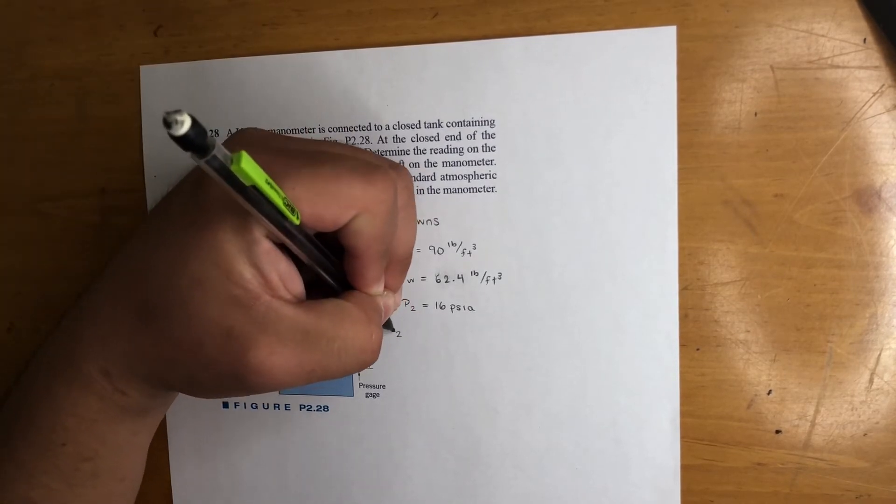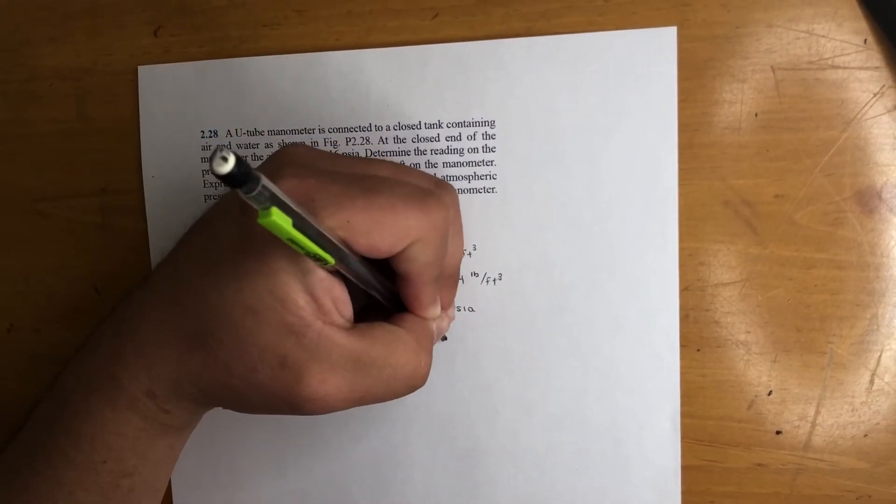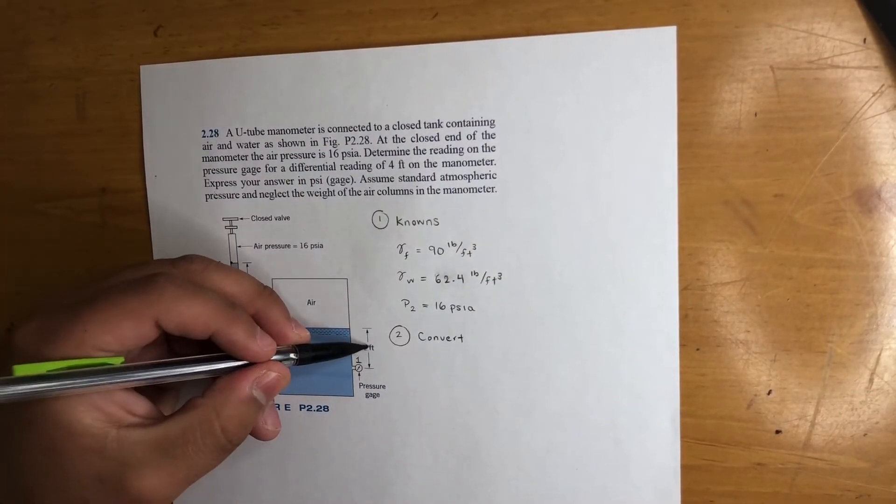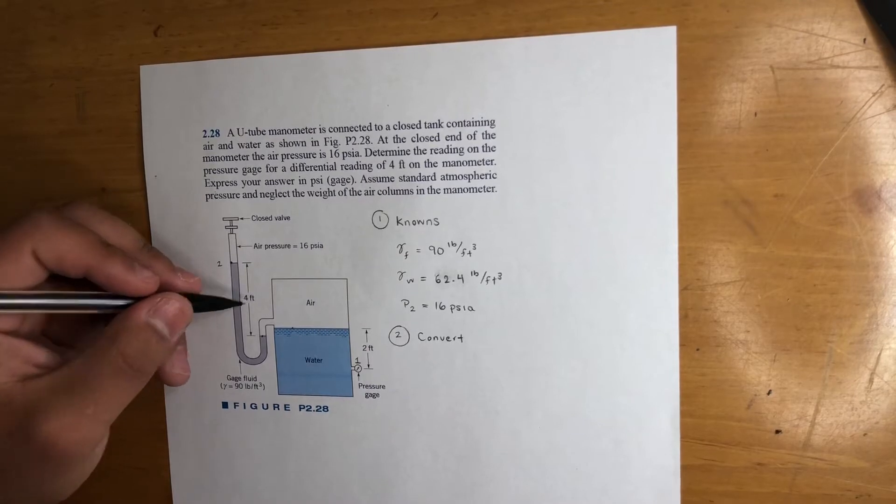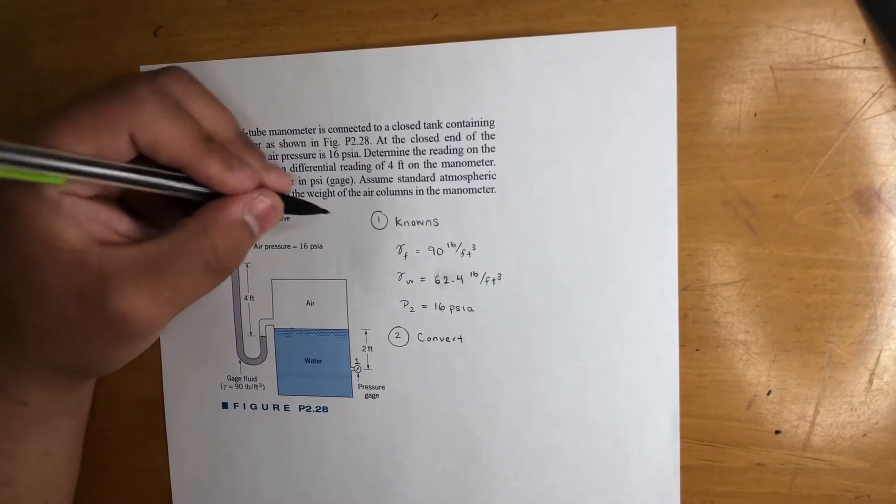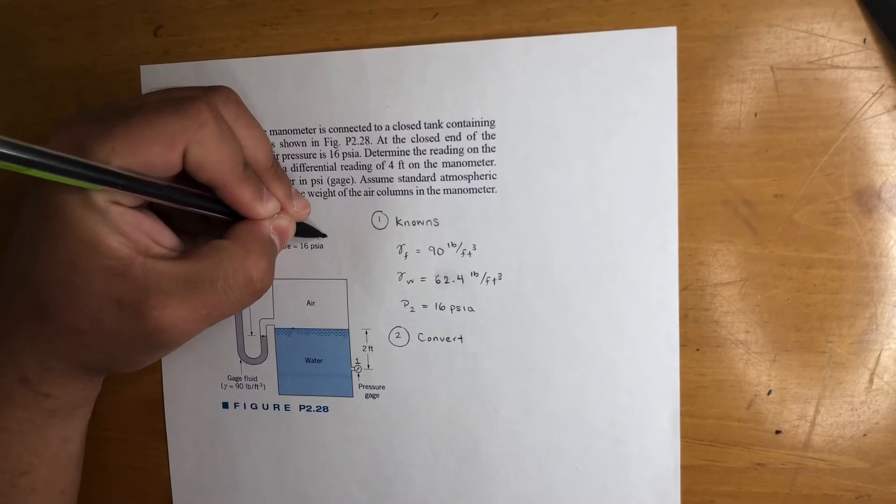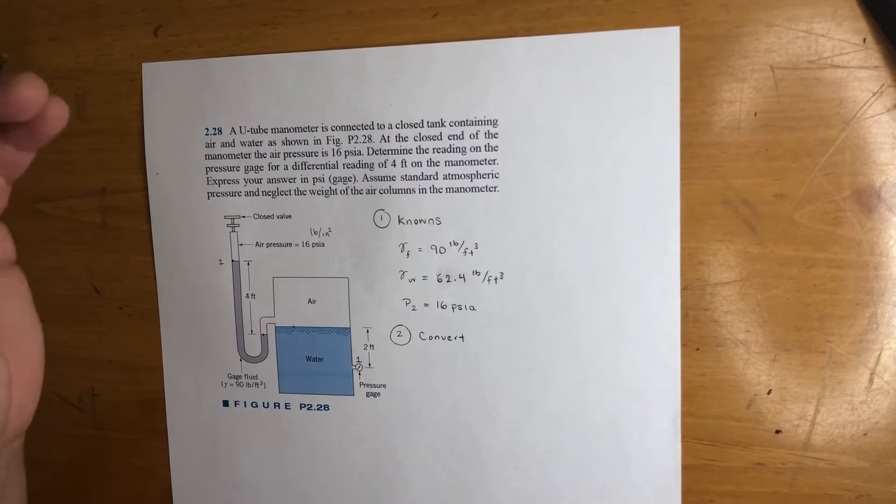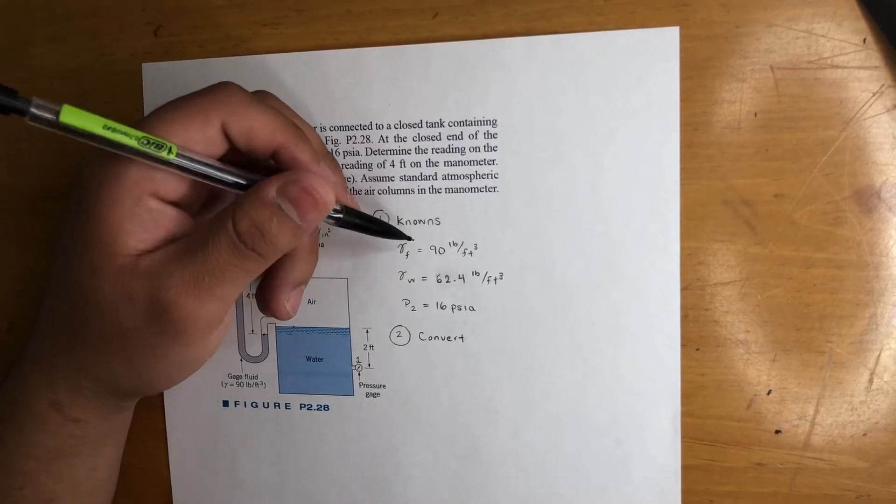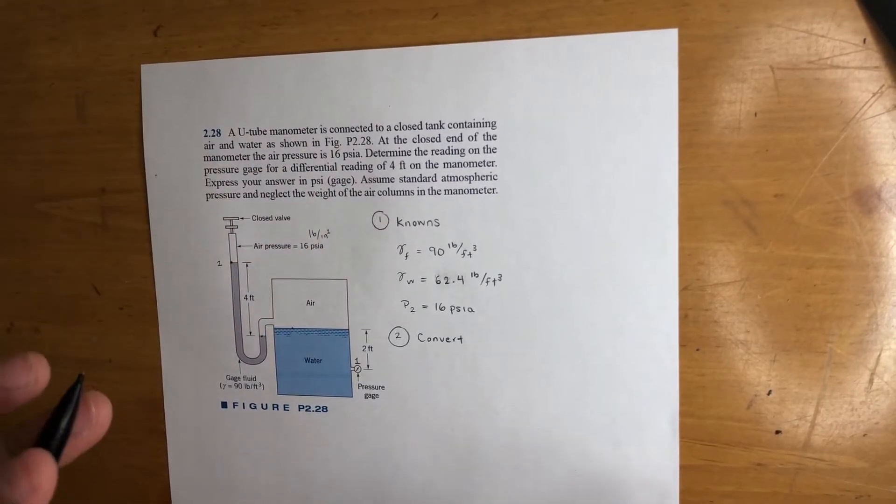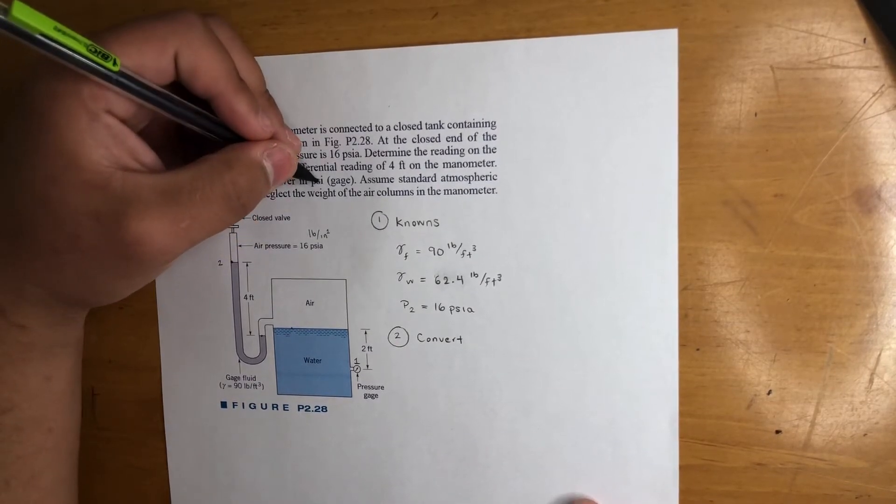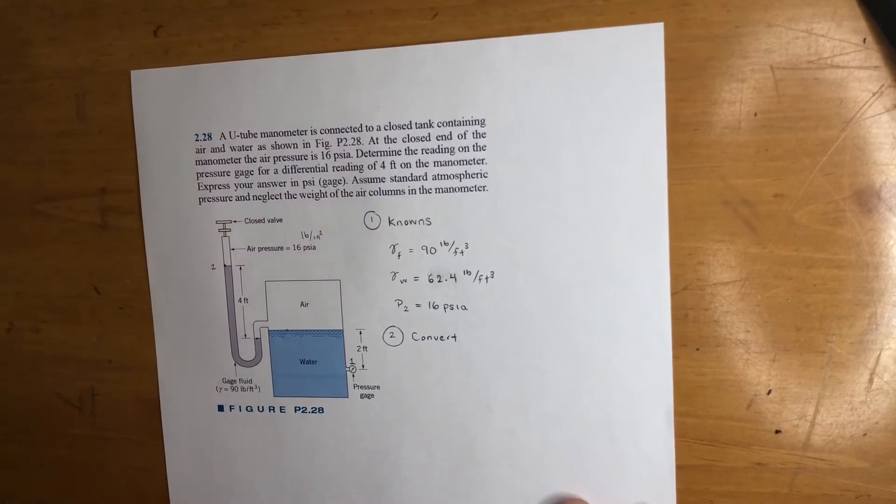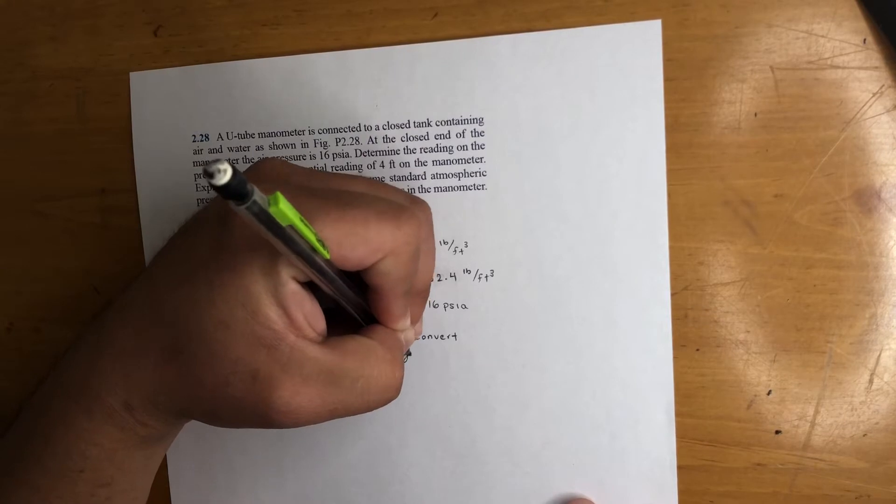Second step, what I would do is convert. Now this is why I'm telling you this problem is a little confusing, because look, we got feet here, feet cubed, pounds per square inch—that's what that means, right? So inch squared. So feet and inches, you got to convert some stuff. Let's start off converting. Well, let's keep everything in inches because they're looking for psi gauge, so pounds per square inch. Let's just convert everything to inches right away. So the gamma of our fluid...